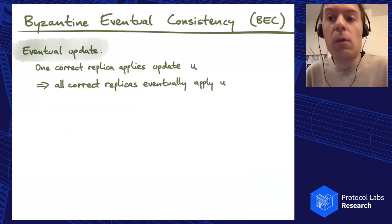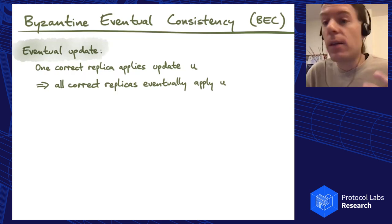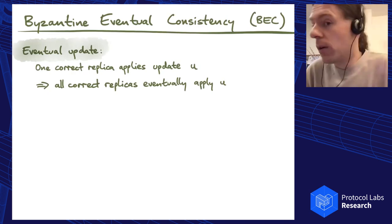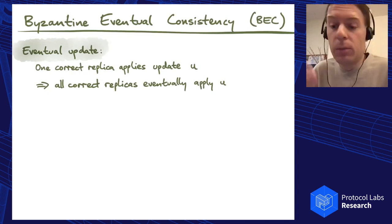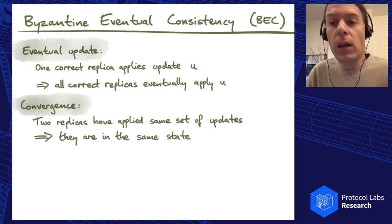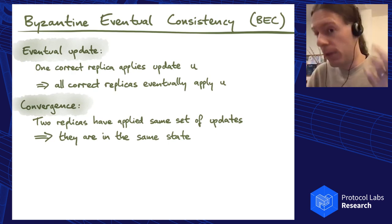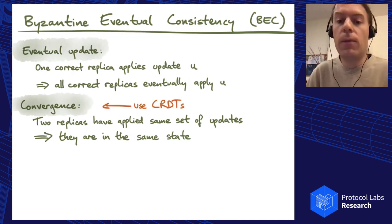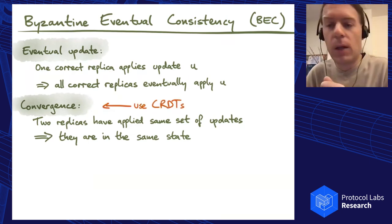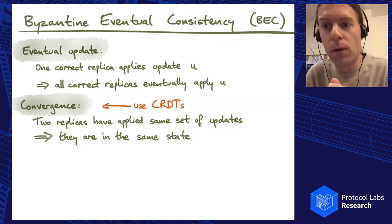Byzantine eventual consistency we can define in terms of a couple of properties. One is a simple liveness property: if one correct replica applies an update, then eventually all correct replicas will apply that update. Second property is convergence: if you've got any two replicas that have seen the same set of updates, then they must be in the same state. That can be achieved, for example, using CRDTs. I'm not going to talk about those in this talk, but there's a lot of existing work on that, which Victor mentioned briefly just now.